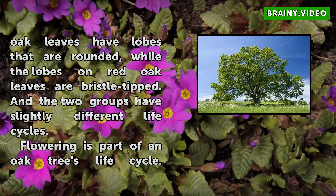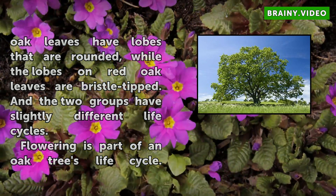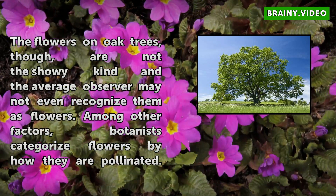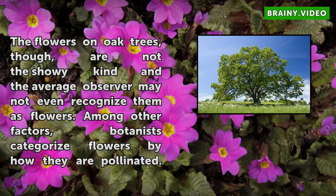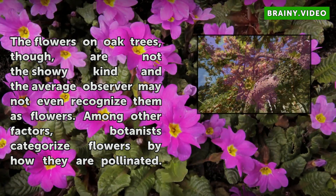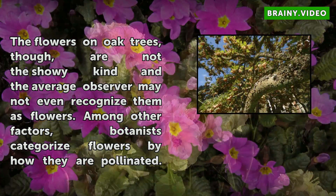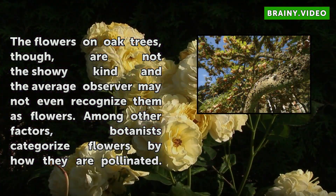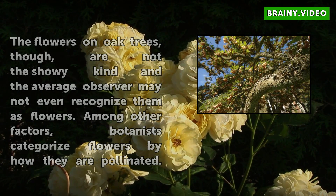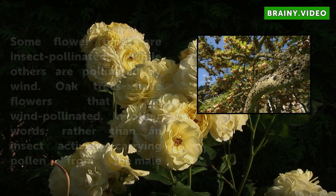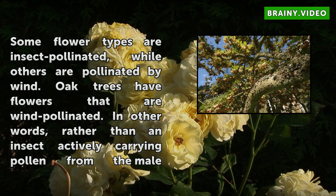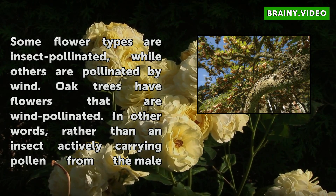Flowering is part of an oak tree's life cycle. The flowers on oak trees, though, are not the showy kind, and the average observer may not even recognize them as flowers. Among other factors, botanists categorize flowers by how they are pollinated. Some flower types are insect-pollinated, while others are pollinated by wind. Oak trees have flowers that are wind-pollinated.